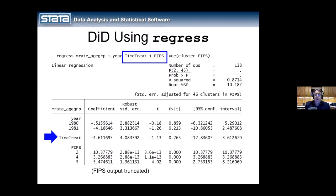Another way, shown in the manual, is to include year as a main effect, include time_treat as the interaction term, and treat state FIPS as a fixed effect — estimating a separate coefficient for each state. This gives more correct standard errors. Those are three different ways you could fit this using the regress command. There are also ways with areg and xtreg and some other things, but that's the basics.